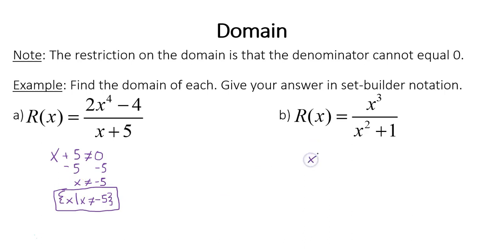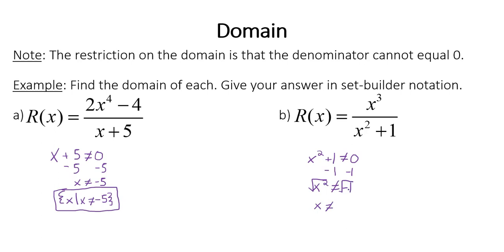In part b, for x squared plus 1 in the denominator, the denominator cannot equal zero. Solving this equation, x squared cannot equal negative 1. Taking the square root of both sides, x cannot equal the square root of negative 1, which is imaginary — it's plus or minus i. We don't care about imaginary restrictions; we only care about real numbers, and that's what we're graphing in this section. So the domain is actually all real numbers — you can plug any real number into this function.